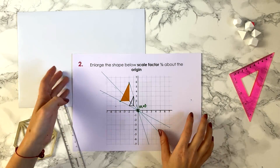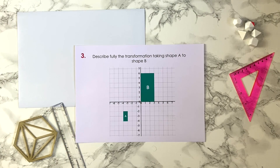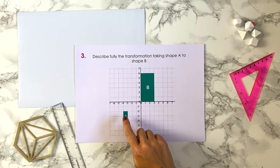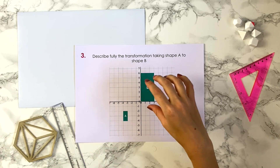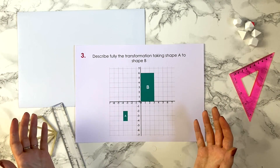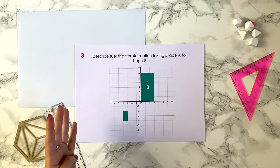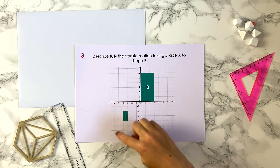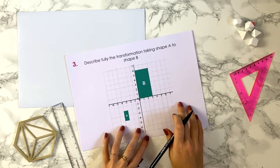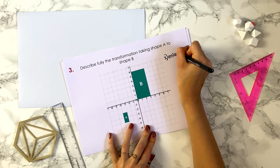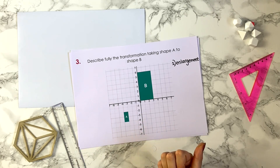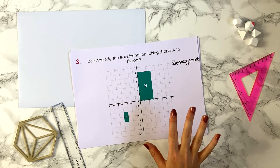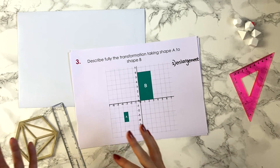Now let's look at a different style of question. This question asks us to describe fully the transformation taking shape A to shape B. There are four key transformations that usually crop up, especially in GCSEs. You can see clearly that in this transformation the shape has changed size — it's got bigger. The only one of the four transformations that can change size is enlargement, so we know straight away this is an enlargement. You'll get one mark for stating 'enlargement'.